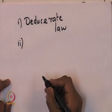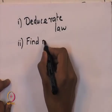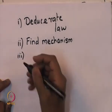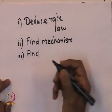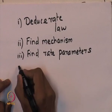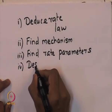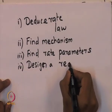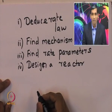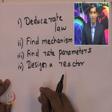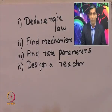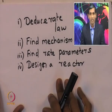We have learnt the second step: how to find the mechanism behind a certain catalytic reaction. And for a particular example, we found the rate parameters and designed a reactor. In particular, we considered the example of hydro-demethylation of toluene on a solid mineral catalyst containing clinoptylolite, and looked at the experimental data, deduced the mechanism, and estimated the rate parameters.